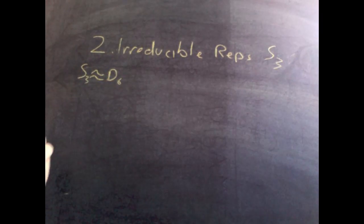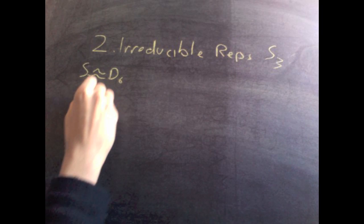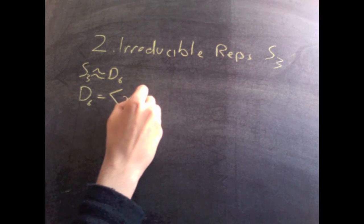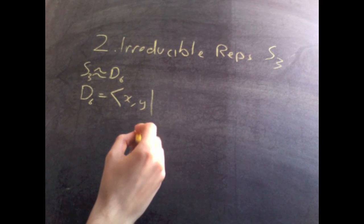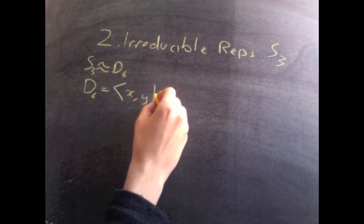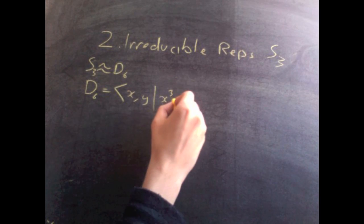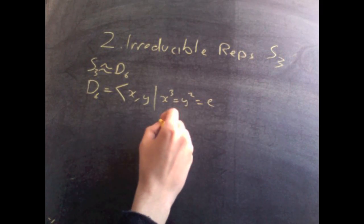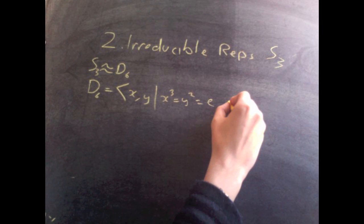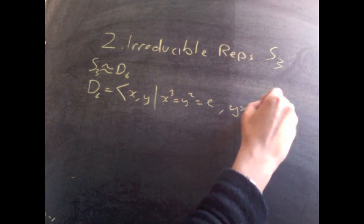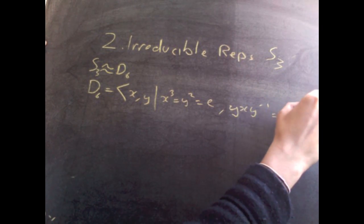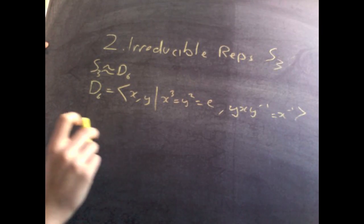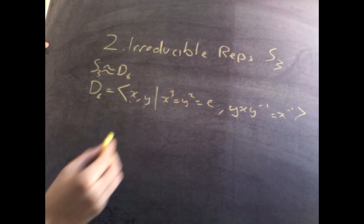S3 is isomorphic to D6, and D6 has presentation of X rotations and Y reflections with the property that X cubed equals Y squared equals E, and YXY inverse is X inverse. So now all we need to do is define our representations on these two generators.